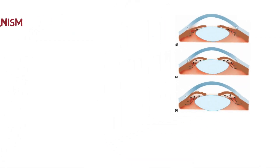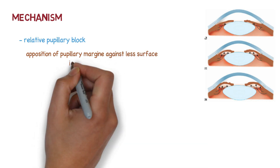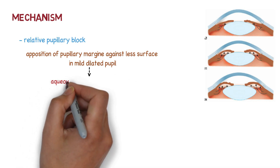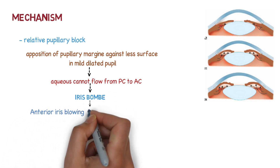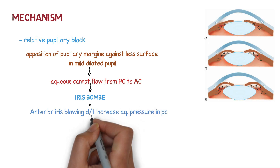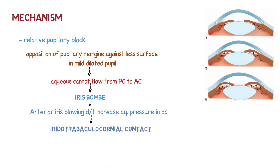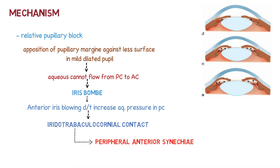Let's talk about the mechanism. Due to relative pupillary block — that is, opposition of the pupillary margin against the lens surface in a mildly dilated pupil — aqueous outflow is obstructed. Aqueous cannot flow from the posterior chamber to the anterior chamber and the pressure rises. This condition is called iris bombé. Due to the increased aqueous pressure in the posterior chamber, the anterior iris bows forward, causing iridotrabecular contact. This leads to adhesions called peripheral anterior synechiae — the iris adheres to the angle — which is why this condition is called primary angle closure glaucoma.